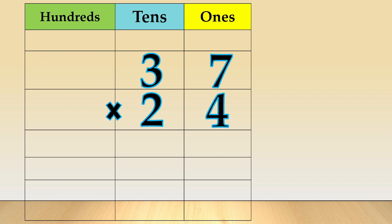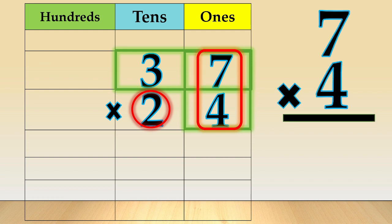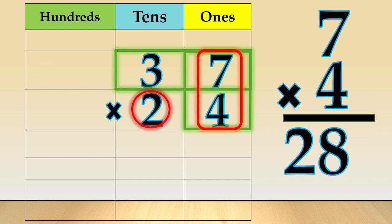First, we multiply by the ones place. We are going to multiply 37 times 4 — just ignore the 2. So, 7 times 4 is equal to 28. We write 8 in the ones column. Now, we carry 2 to the tens place.